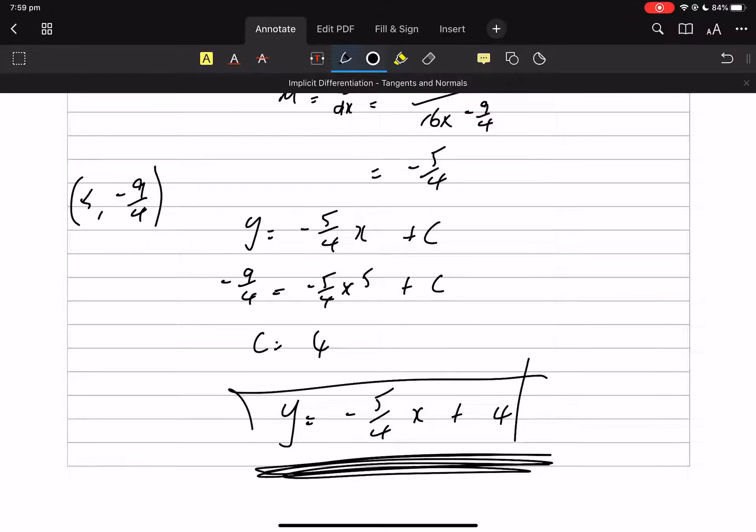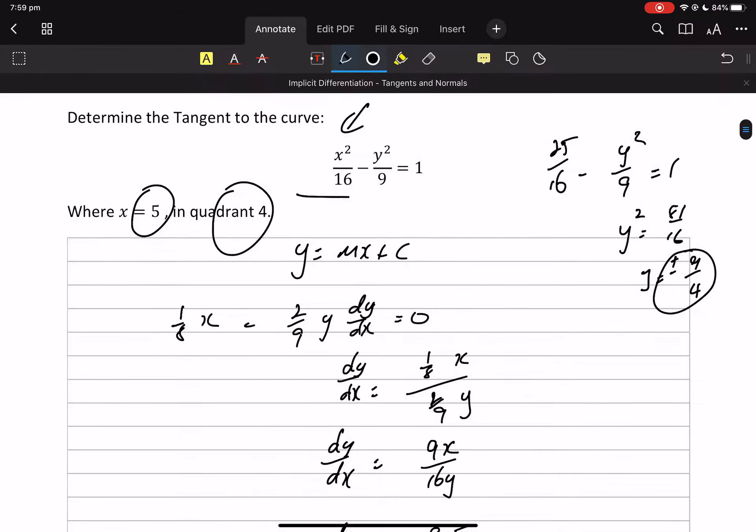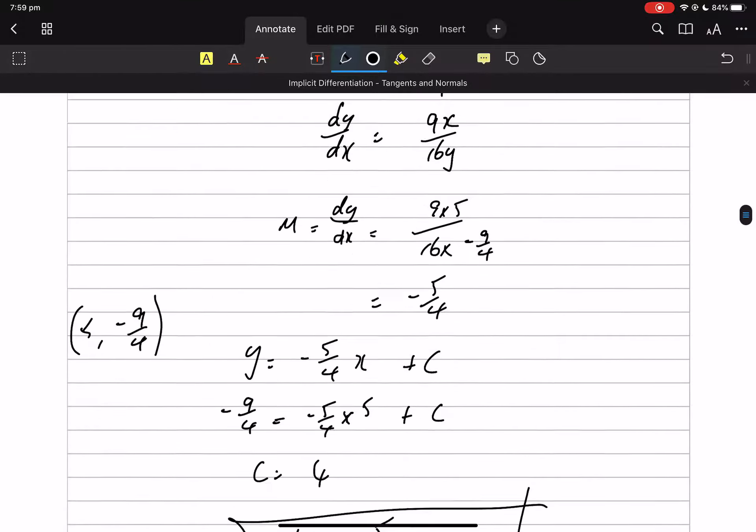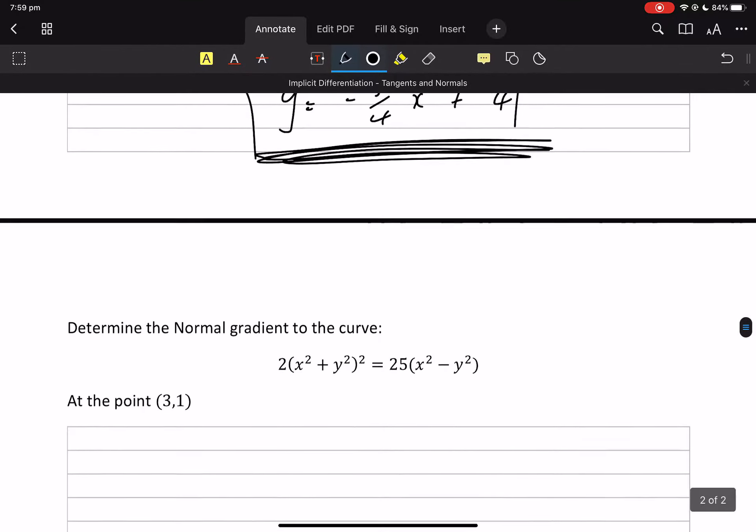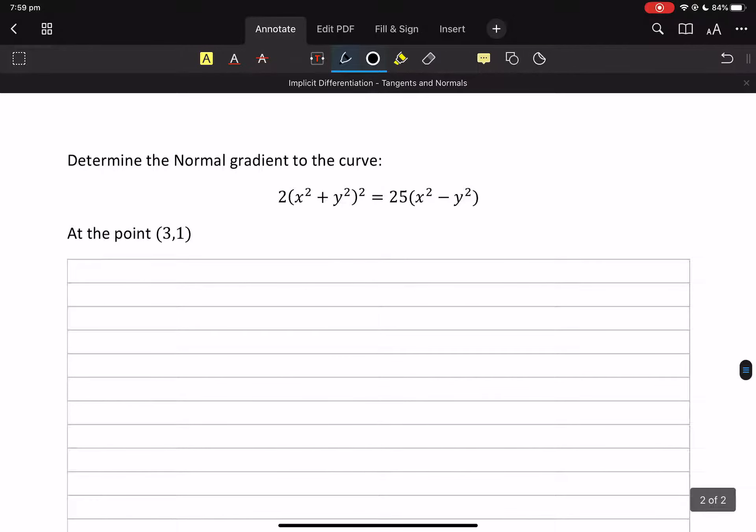So you're going to jump into Desmos. Plot that. Plot that. And hopefully it's a tangent where x is 5. If it's wrong, let me know.